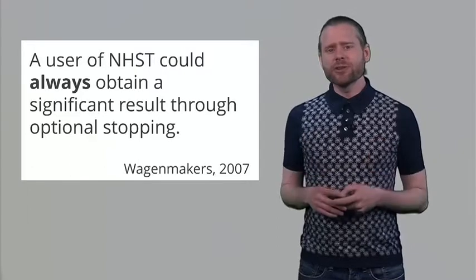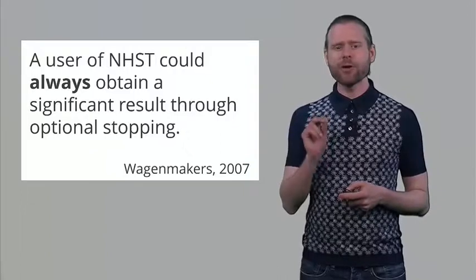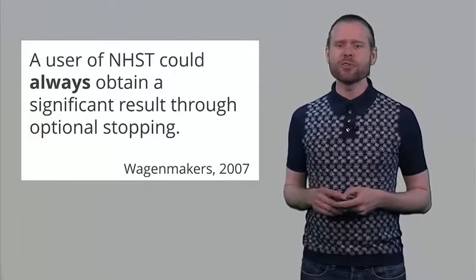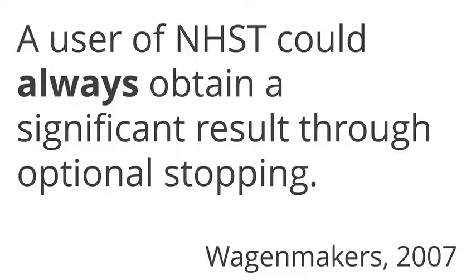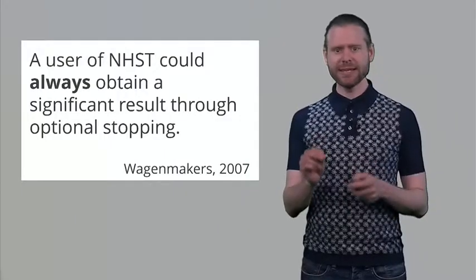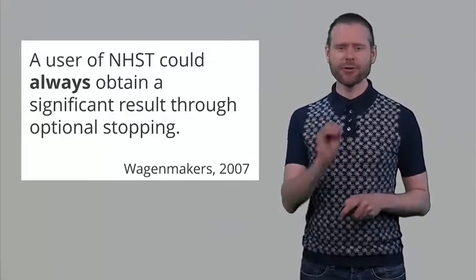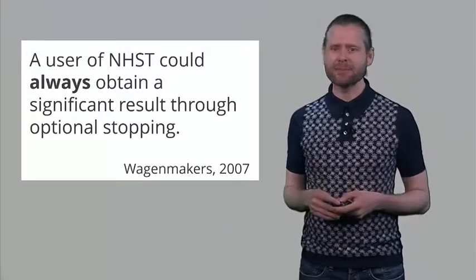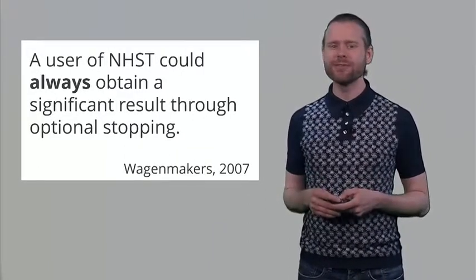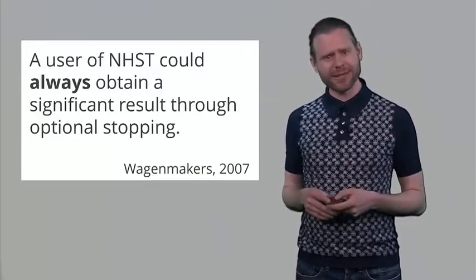Formally, using optional stopping without correction will always eventually lead to a statistically significant result. Sometimes you have to look at the data 100,000 times, so it may not be practical, but as long as you keep looking at data where nothing is going on, you will have a 100% success rate. This will hugely inflate your error rate, so that is not what we want. The p-value distribution from optional stopping shows a weird peak on the left — far more significant p-values than there should be, with nearly significant p-values pulled just below the threshold.